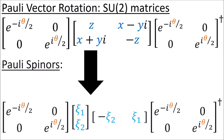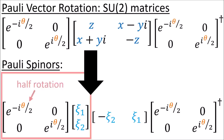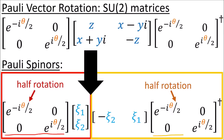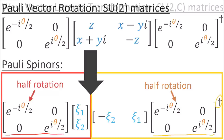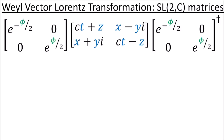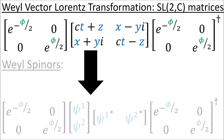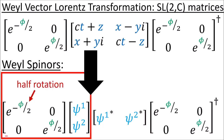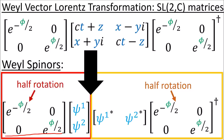If we rotate a Pauli vector using a pair of SU(2) matrices and factor it into Pauli spinors, the column spinor rotates with a single half-angle SU(2) matrix from the left, and the row dual spinor transforms with the Hermitian conjugate of this SU(2) matrix from the right. Similarly, if we Lorentz transform a Weyl vector with a double-sided SL(2,C) transformation and factor it into Weyl spinors, the column spinor transforms with a single SL(2,C) matrix from the left, and the row dual spinor transforms with the Hermitian conjugate of this SL(2,C) matrix from the right.